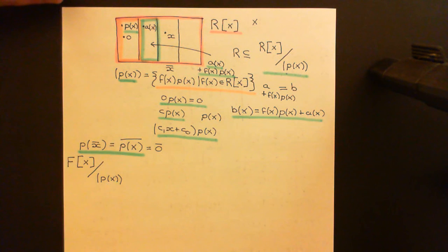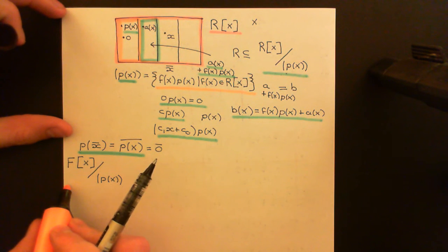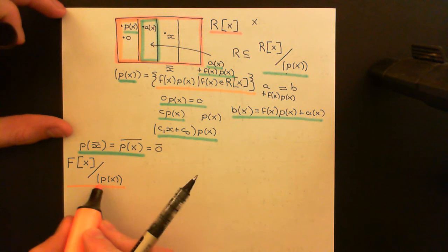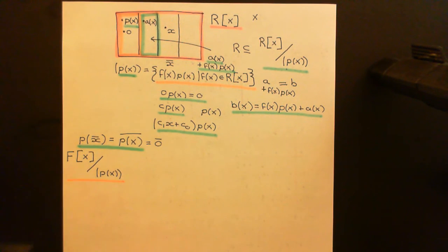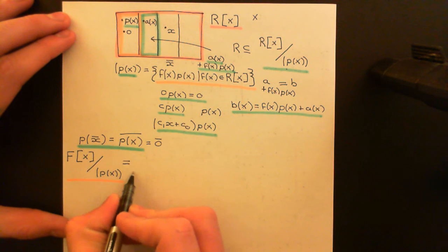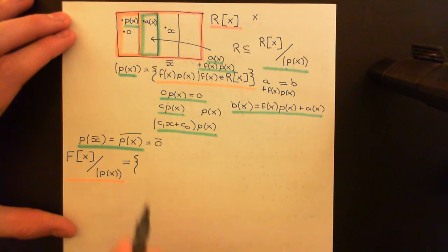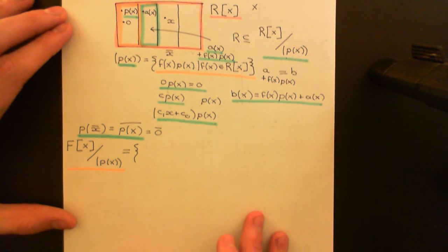It becomes more complicated in the context of a general ring. So what we're going to be doing is taking a polynomial ring over the field F, and quotienting out by the principal ideal generated by some polynomial P of X. What I want to do is characterize what this structure is actually going to look like — find representatives for all of the cosets.